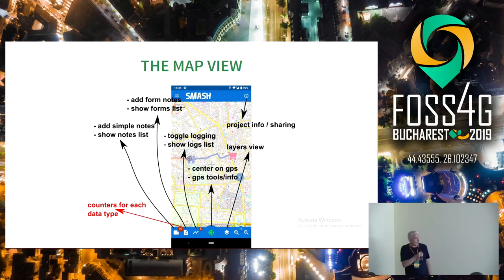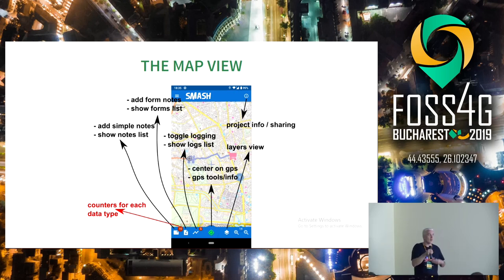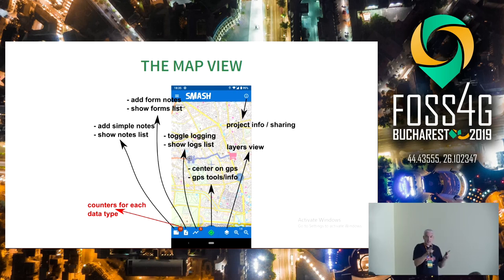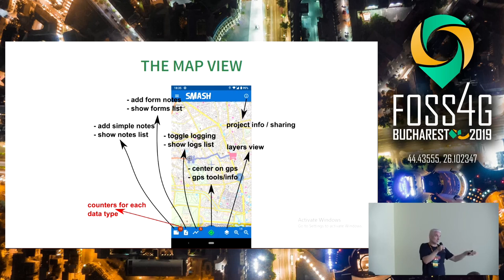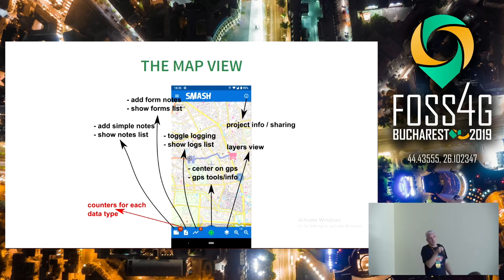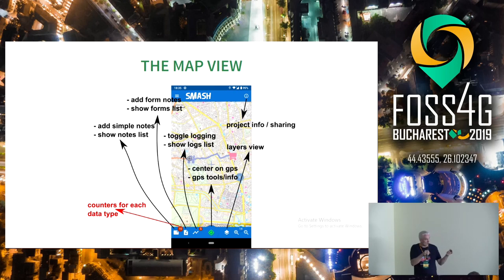The toolbar: every button has a double function. One tap is the action; long tap shows the information of what you collected. The first button adds a simple note, or shows the list of all notes. The second adds a form note, or shows the list. Then there's start a log, or show the logs list. The center GPS button shows center map on GPS position or GPS information and tools. And then we have the usual tools like zoom in, zoom out, the layer view, and project information. Counters over the icons show how many notes you have surveyed.